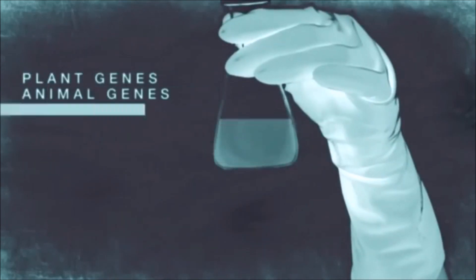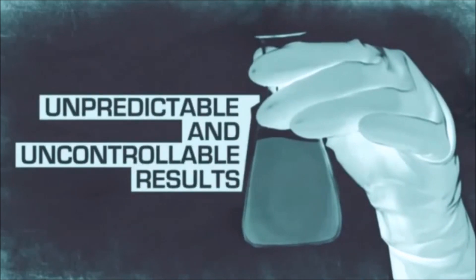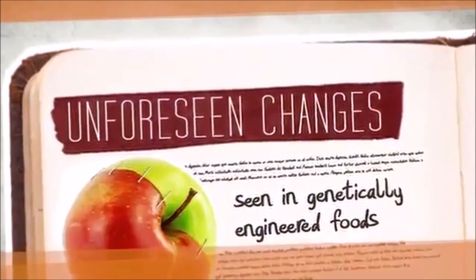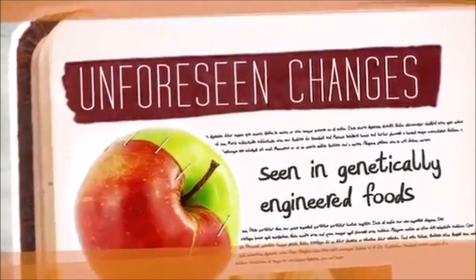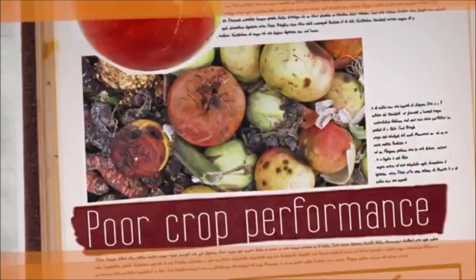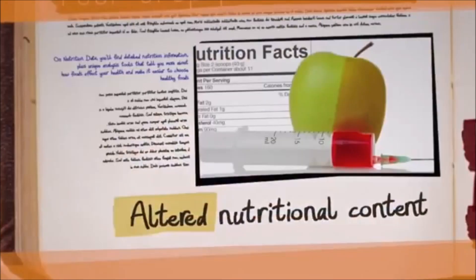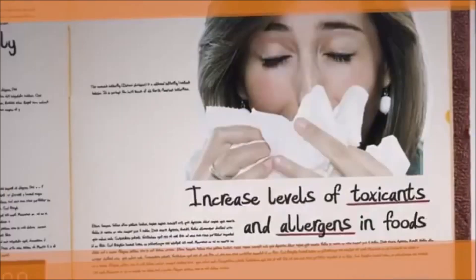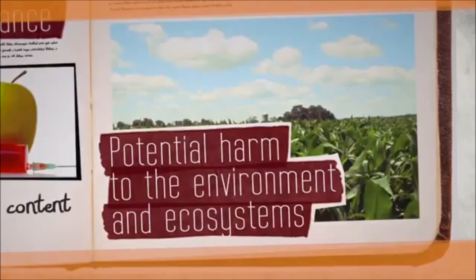Mixing plant, animal, bacterial and viral genes will lead to unpredictable and uncontrollable results. Examples of unforeseen changes seen in genetically engineered foods include poor crop performance, altered nutritional content, increased levels of toxins and allergens in foods, and potential harm to the environment and ecosystems.